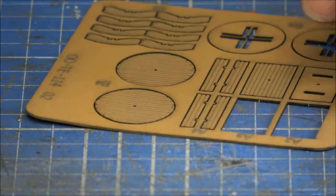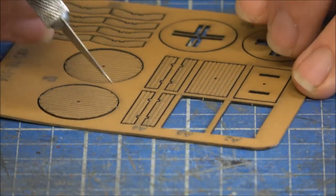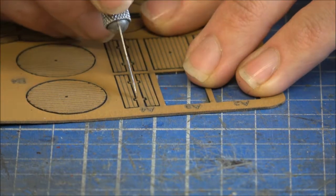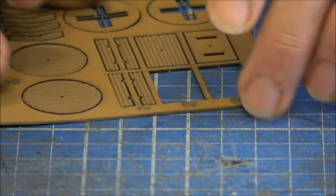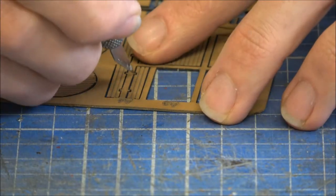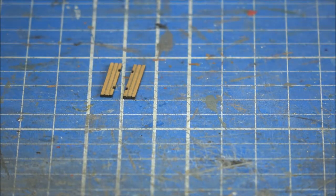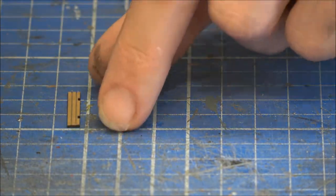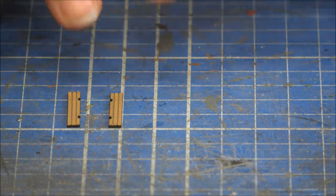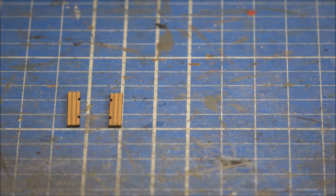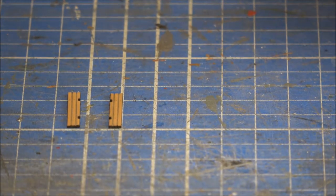Whilst we then get the final couple of parts for it, which is the seats, which are again on one of the main frets. So I've got these three. And again, with the seats, we've got etched details in there to represent planking and rivets and things.